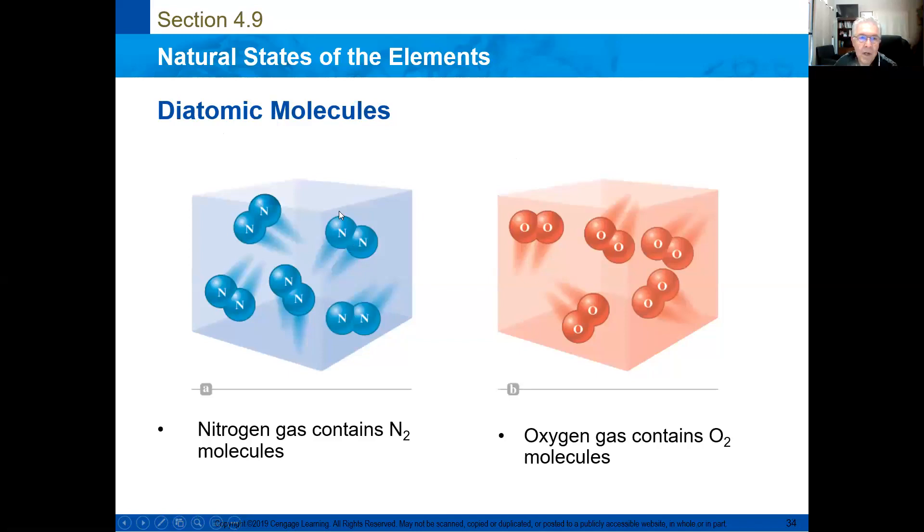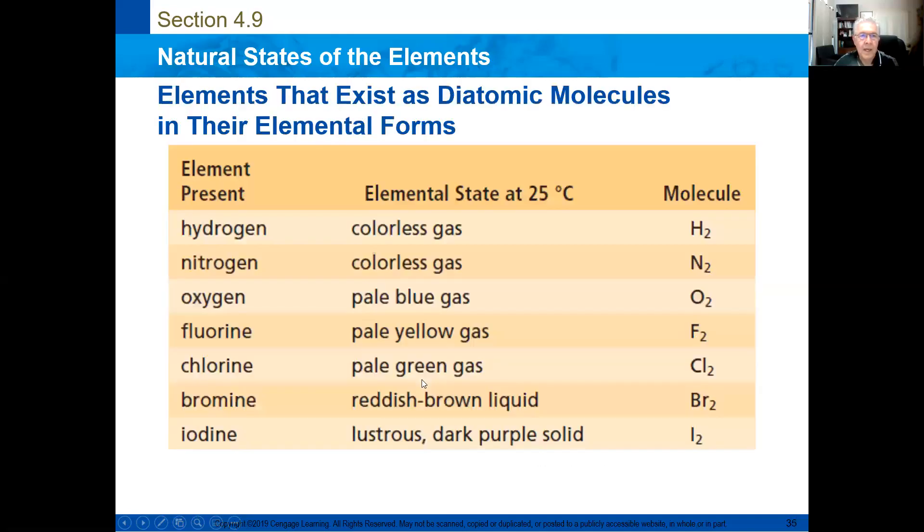The diatomic molecules are made of two atoms of the same element. For example, nitrogen and oxygen. Elements that exist as diatomic molecules are, for example, hydrogen, nitrogen that is a colorless gas, oxygen that is a pale blue gas, fluorine that is a pale yellow gas, chlorine that is a pale green gas, bromine that is reddish brown liquid, and iodine that is lustrous, dark purple solid. Iodine is not the liquid that is sold at the pharmacy. That is a solution.